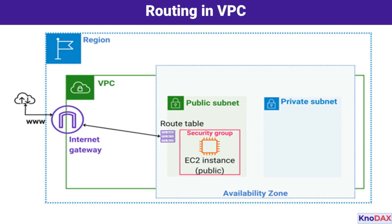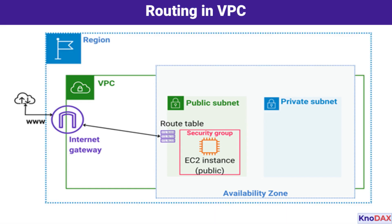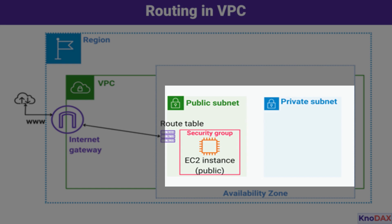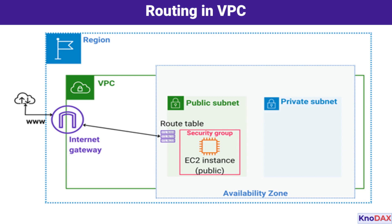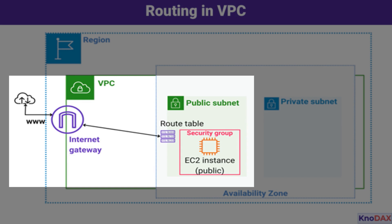Let's dive into how routing works within an AWS VPC by taking a closer look at this diagram. At the heart of this setup is the VPC itself — a logically isolated network where you can launch and manage AWS resources. Within this VPC, there are two distinct types of subnets: public and private, each serving a specific purpose. The public subnet, highlighted in green, is directly accessible to the Internet through an Internet Gateway connected to the VPC. The route table associated with the public subnet includes a route directing all Internet-bound traffic (0.0.0.0/0) to the Internet Gateway, allowing EC2 instances to send and receive traffic from the Internet. Security groups are in place to control which traffic is allowed in and out of these instances.